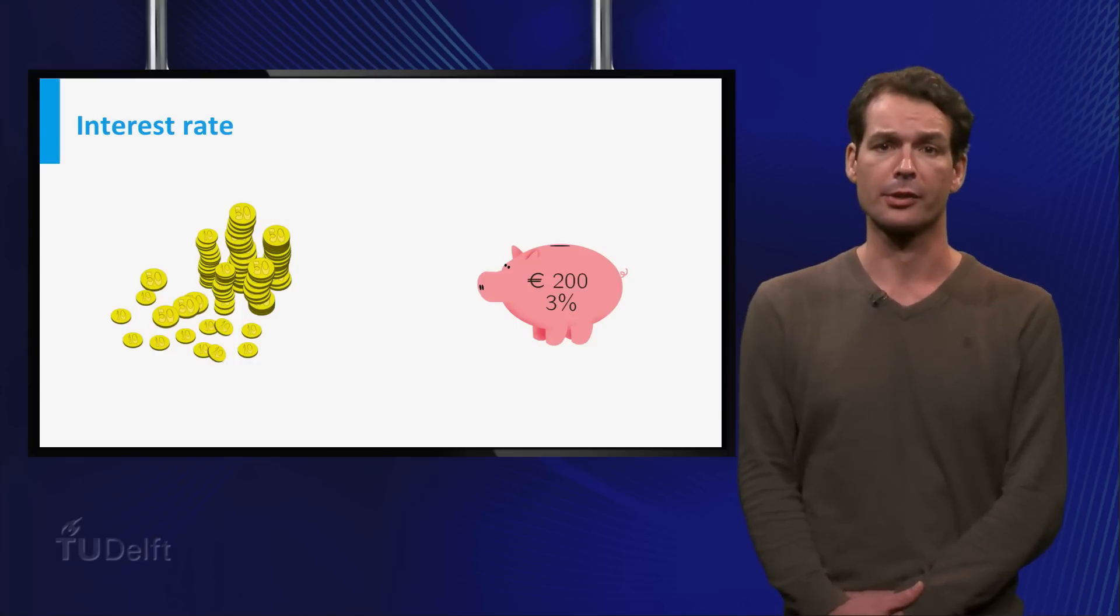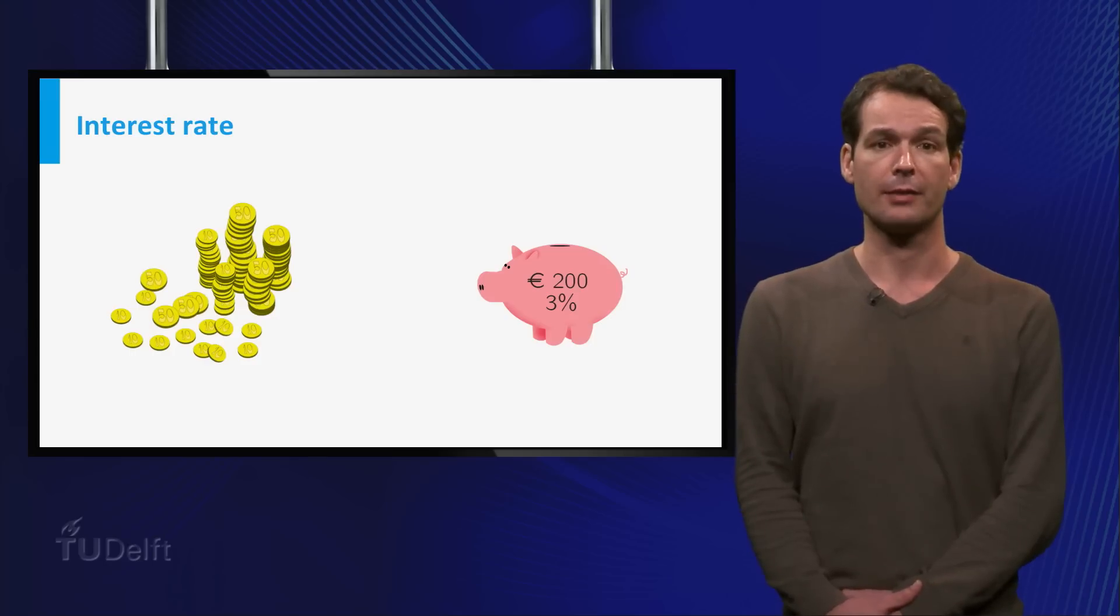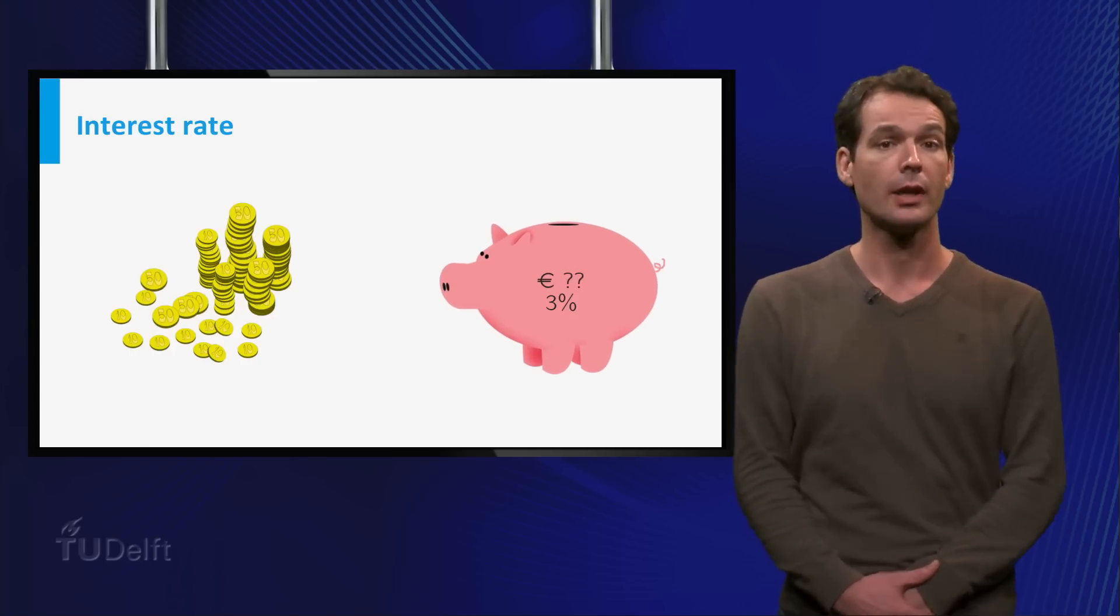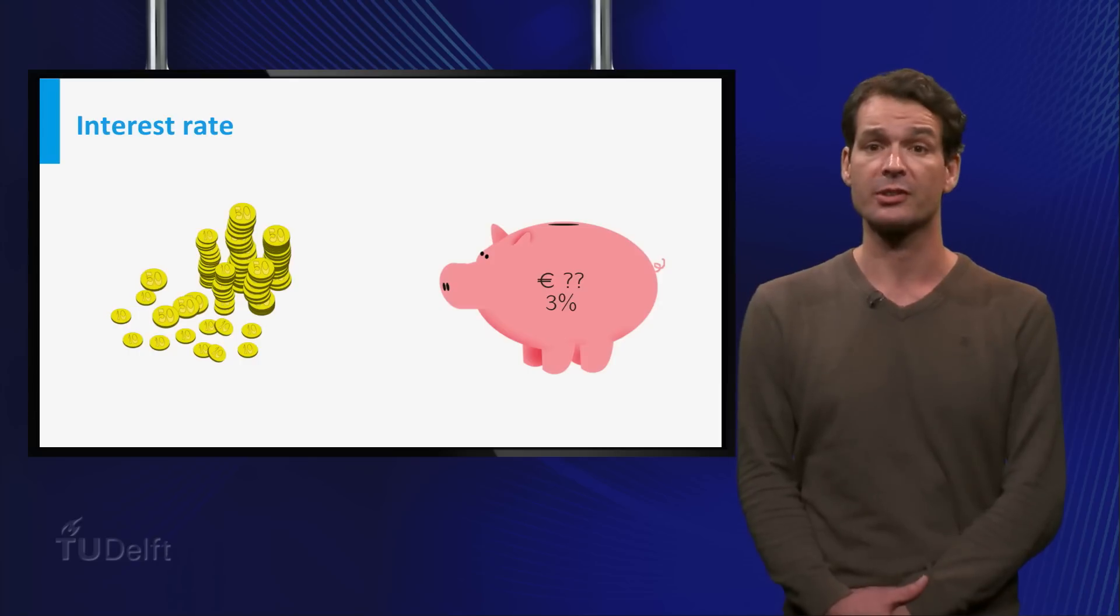Suppose you have some money, say 200 euros, on a savings account that gives you 3% interest per year. How much money have you got after 10 years? And after 15 years? Or can we give a function that describes how much money you have after x years? Of course, we assume here that you don't make extra deposits or withdrawals.